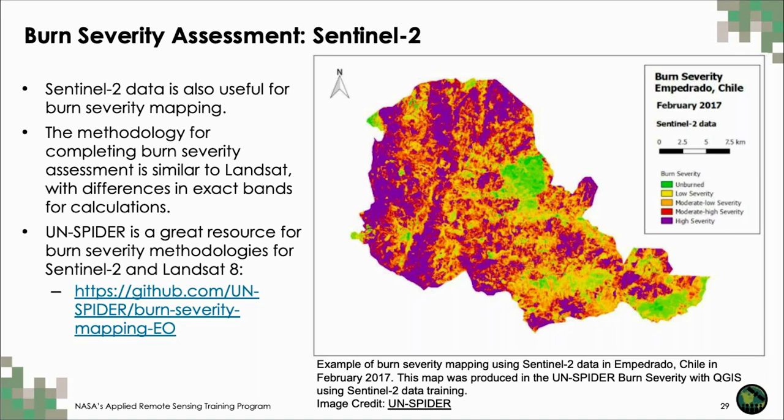I highly recommend checking out the UN-SPIDER training and others available through their GitHub, where you can find trainings to map burn severity with Sentinel-2 and Landsat 8 using QGIS, Google Earth Engine, R, and Python. It's a great resource if you're interested in engaging with any of those tools.